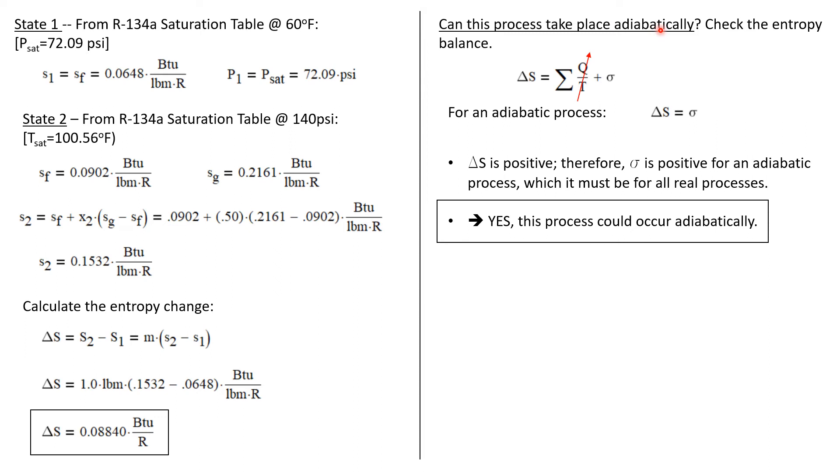Now we want to answer this question: can this process take place adiabatically? Well let's write an energy balance and see if we can determine that. All right, remember that entropy can increase inside a system during a process in two ways: entropy can be transferred in by heat transfer and it can be produced within the system by irreversibilities.